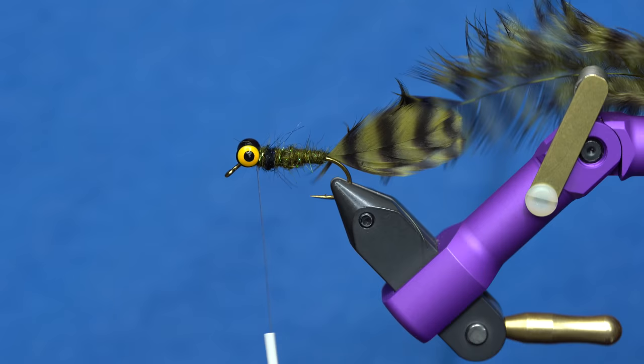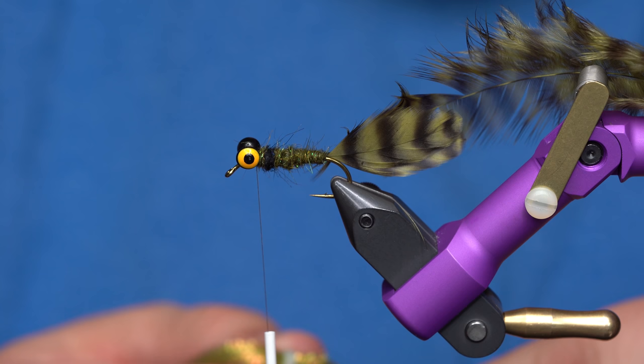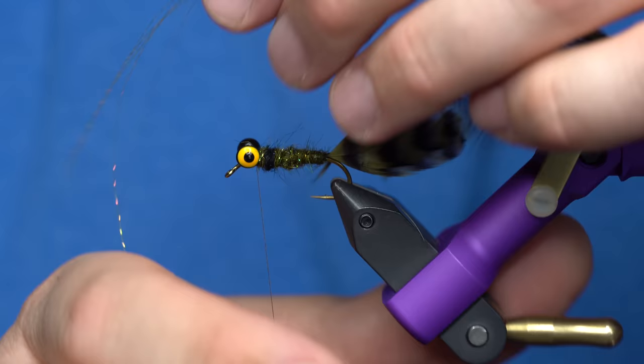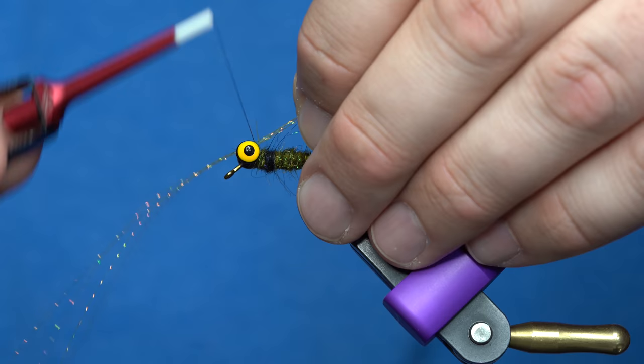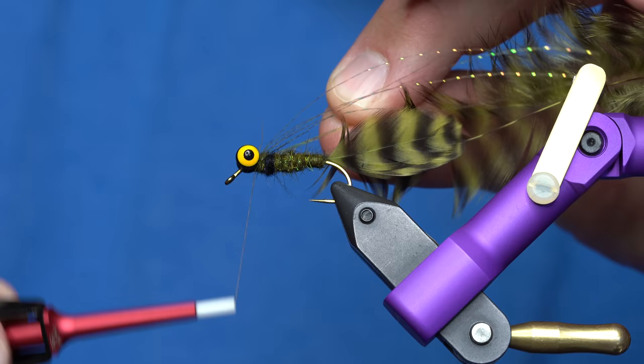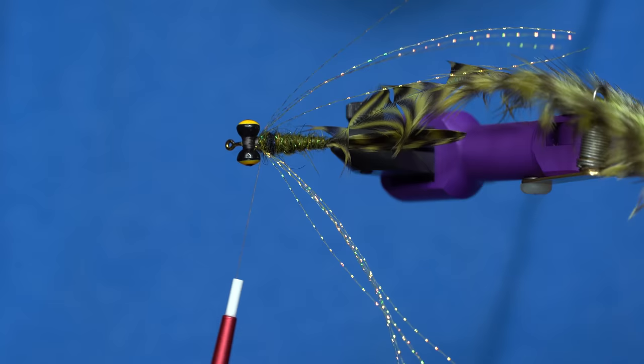We're going to add some flash. So this fly has some flash that runs along the body and it extends out along the side of the tails as well. So what I'm going to do is just take some crystal flash. This is olive crystal flash. And I'll tie it in about the halfway point right behind the eyes. So half the crystal flash is going forward. Half of it's going back. Then I'm going to wrap that around the eye and tie it in on the other side. So essentially you've got two clumps of flash coming on either side of the fly.